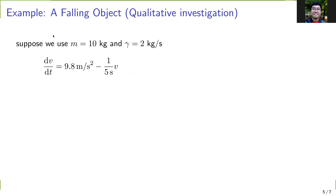Now we can analyze the equation without even solving that differential equation. Suppose we use m = 10 kg and γ = 2 kg/s. Then we can write our differential equation as dv/dt = 9.8 m/s² - (1/5)v.